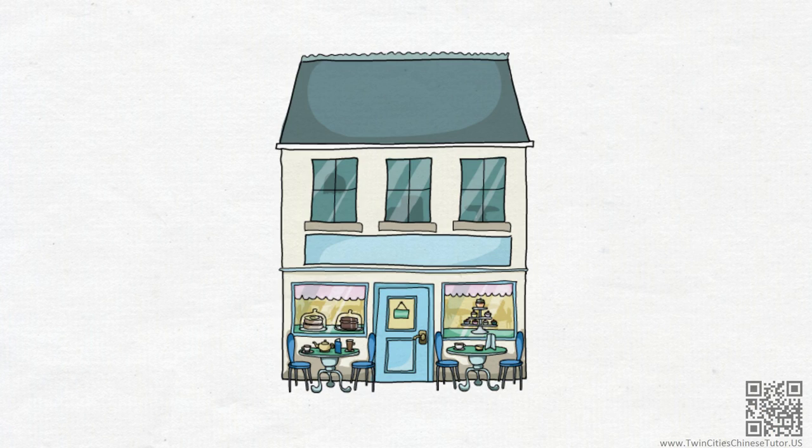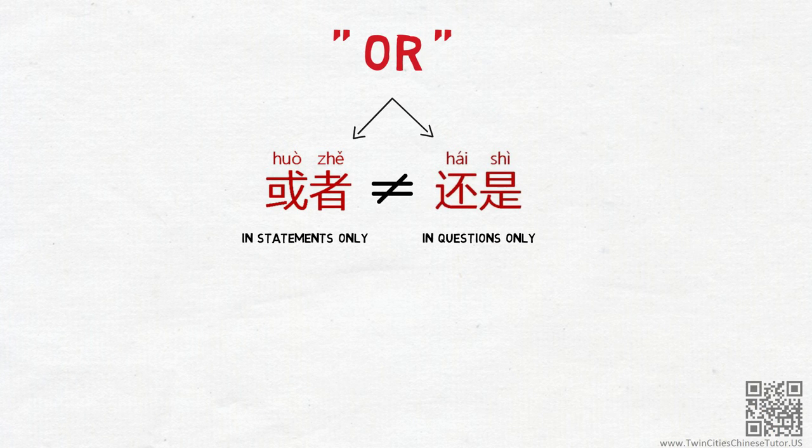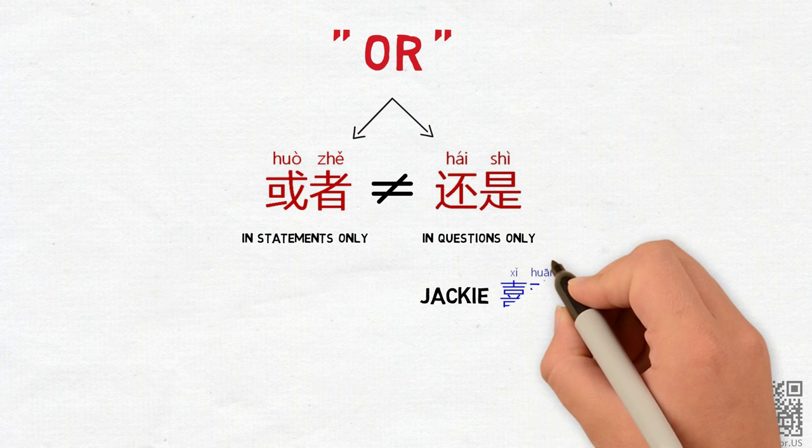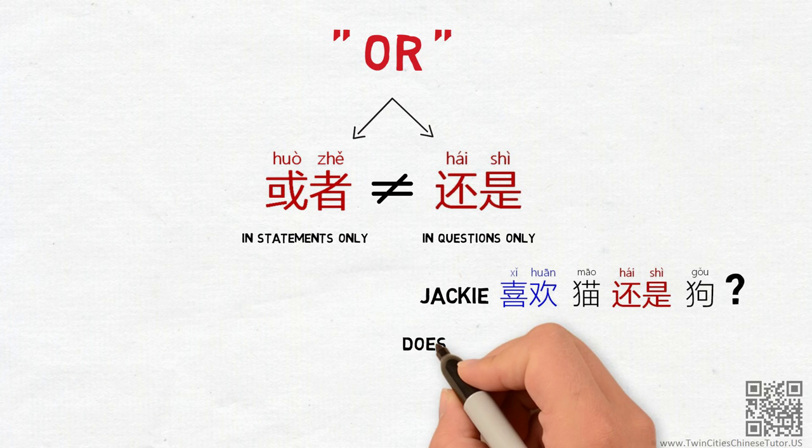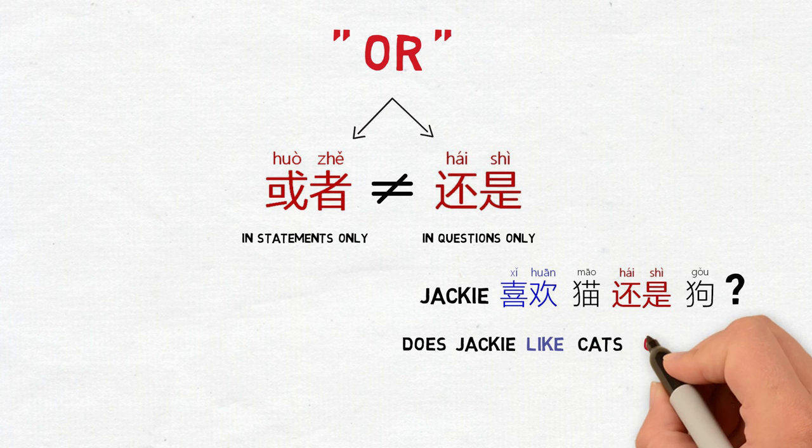In summary, now you understand the difference between 或者 and 还是. You can probably see why it could be confusing to Chinese people if you misuse them. For example, Jackie喜欢猫还是狗 is a question, meaning, Does Jackie like cats or dogs?